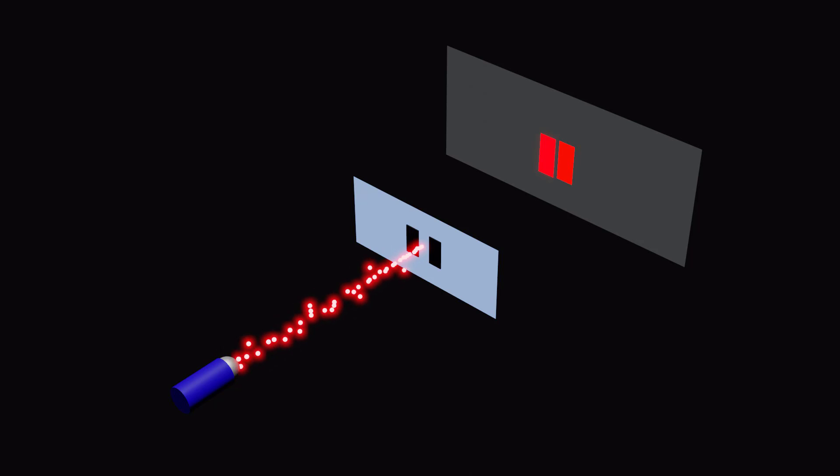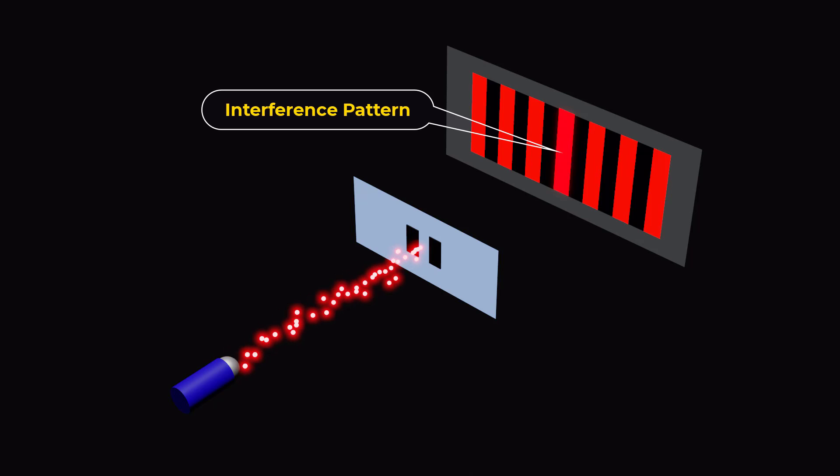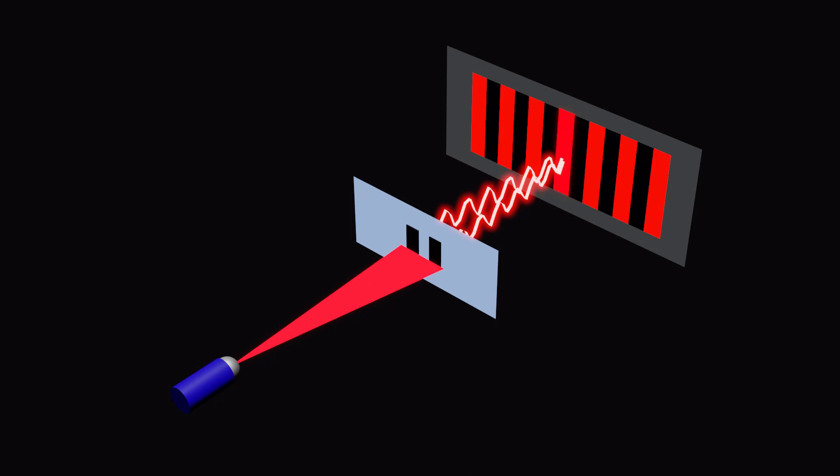However, instead of two separate patterns, Thomas Young observed an interference pattern on the screen, similar to the patterns formed when waves interact with each other.